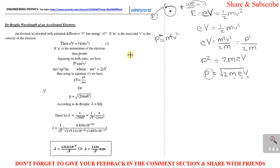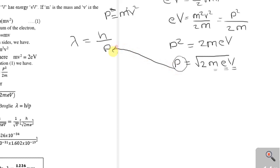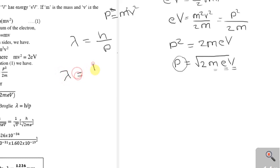We already know the de Broglie wavelength equation: lambda equals h divided by p. Substituting our expression for p, we get lambda = h / √(2meV).